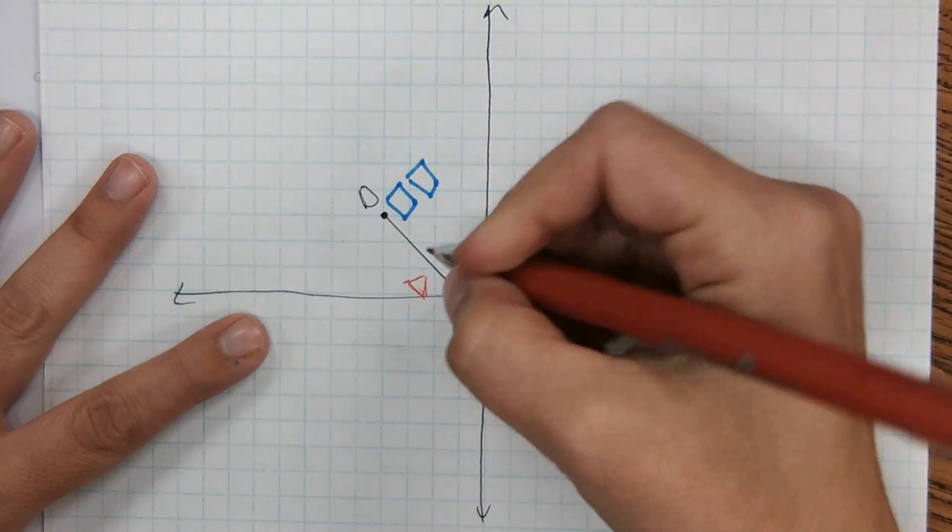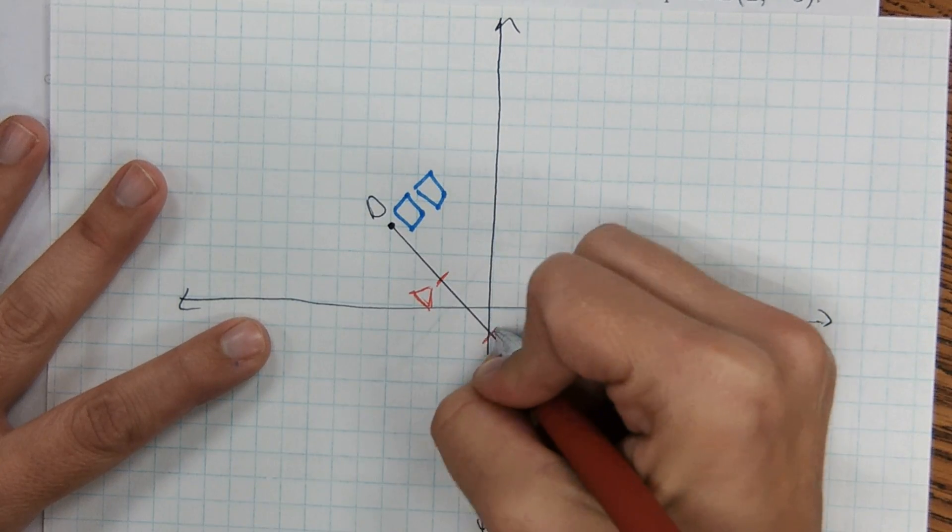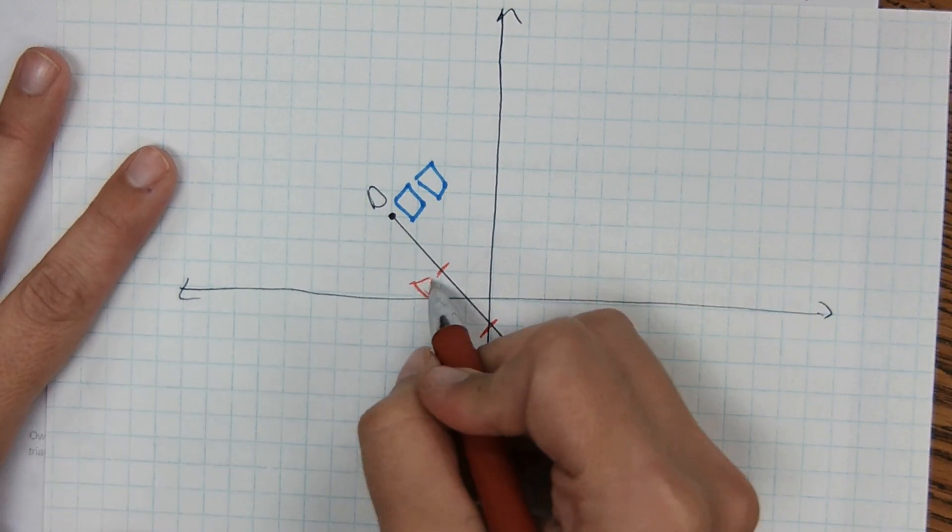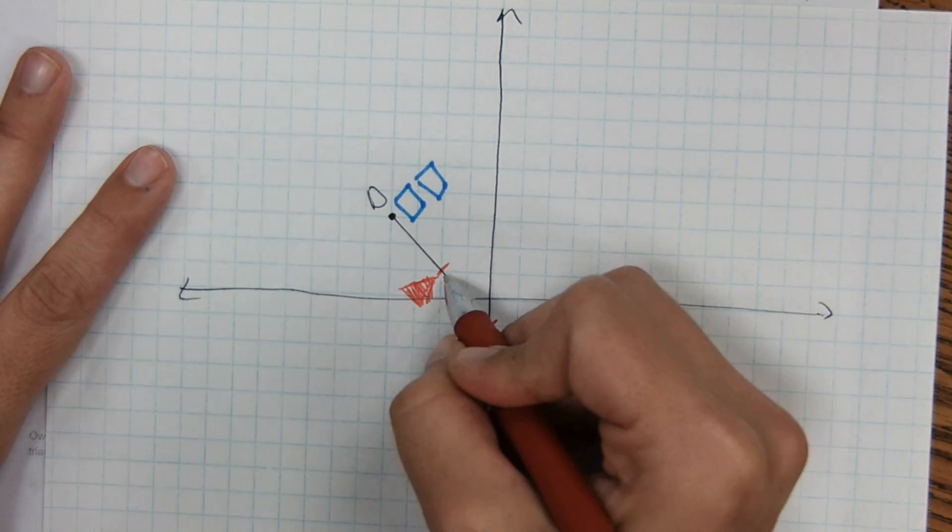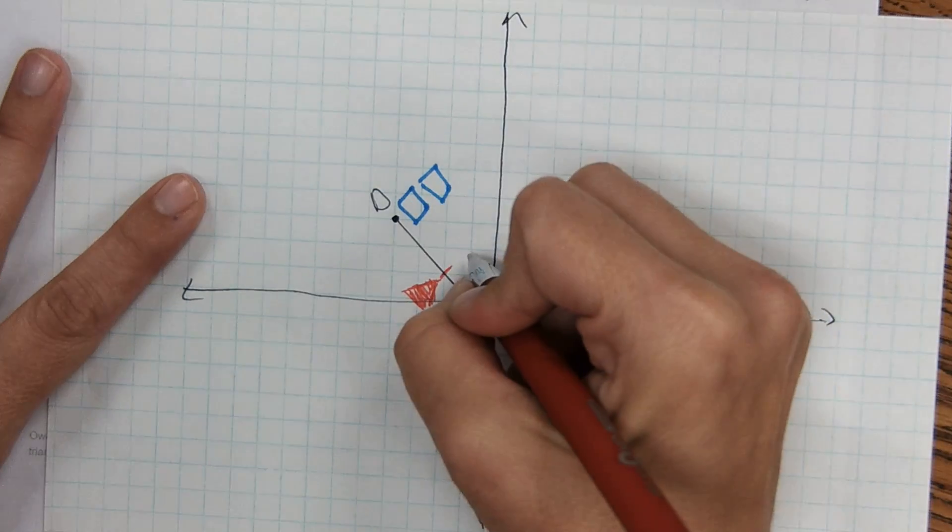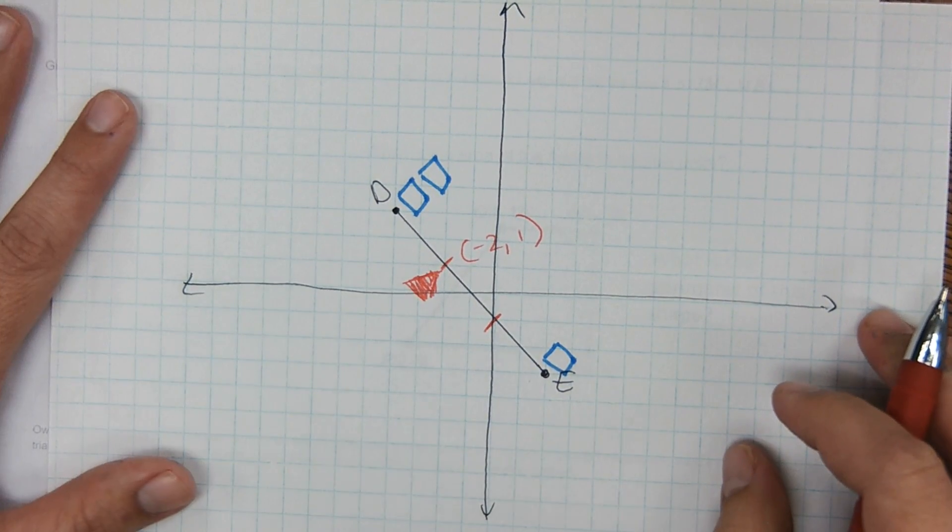And you can visually see this. So you could break this up into three equal parts like this. And you can see that the balance point would be right here. And that is at negative 2, 1. And that's the actual answer.